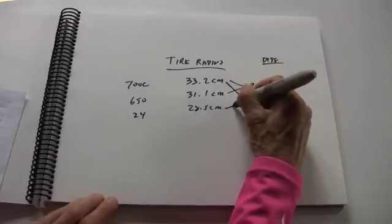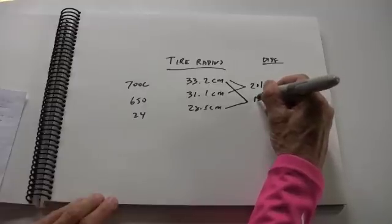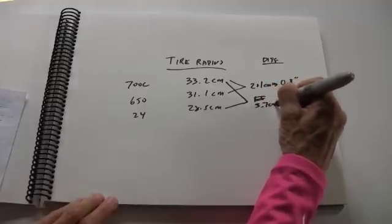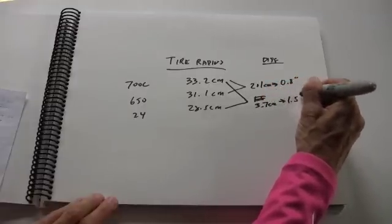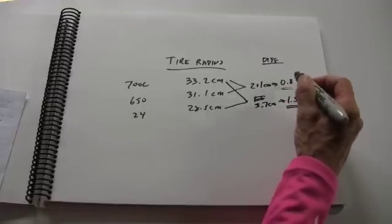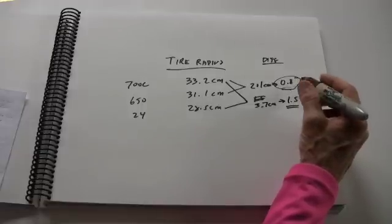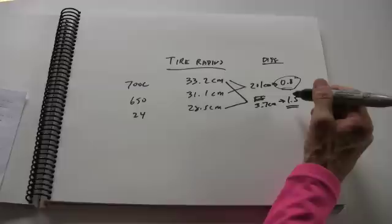The difference between the 700c and the 24-inch is 4.7 centimeters, or 1.5 inches. So you're buying a lot. You can see how we can start to make these top tubes shorter. Essentially, this is dictating to you right here just how much shorter the top tube can be because of that smaller wheel.